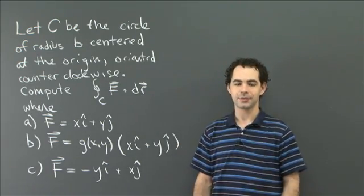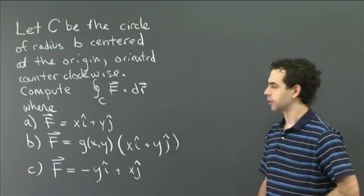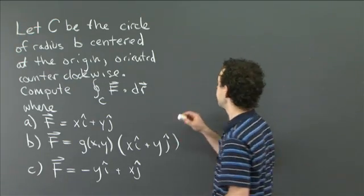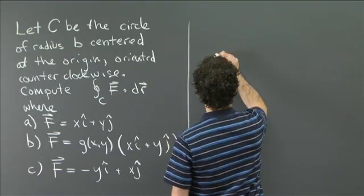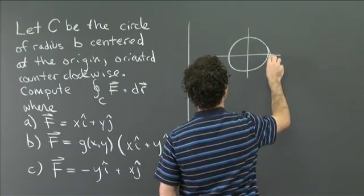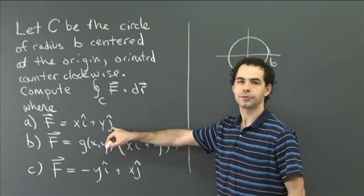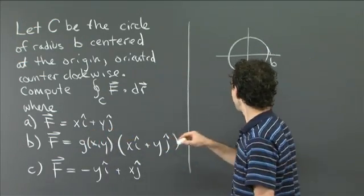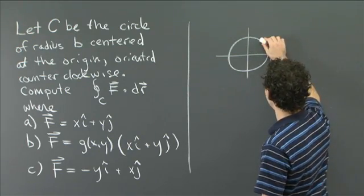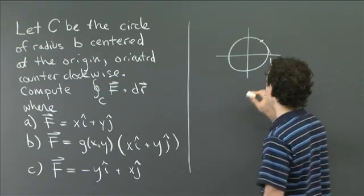Hopefully you had some luck working on these problems. Let's get started. So let's do the first problem first. Let's think about what this vector field f looks like, this first vector field. So let me just draw a little picture over here. So here's our circle of radius b. And this vector field f given by xi plus yj. At every point (x,y), the vector f is the same as the position vector of that point.